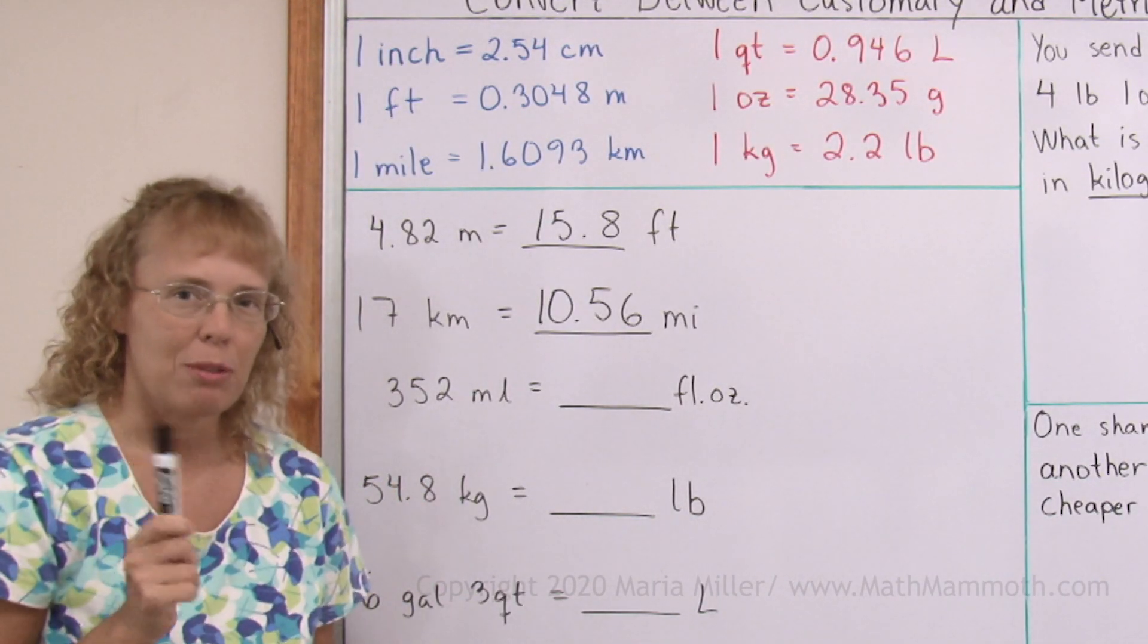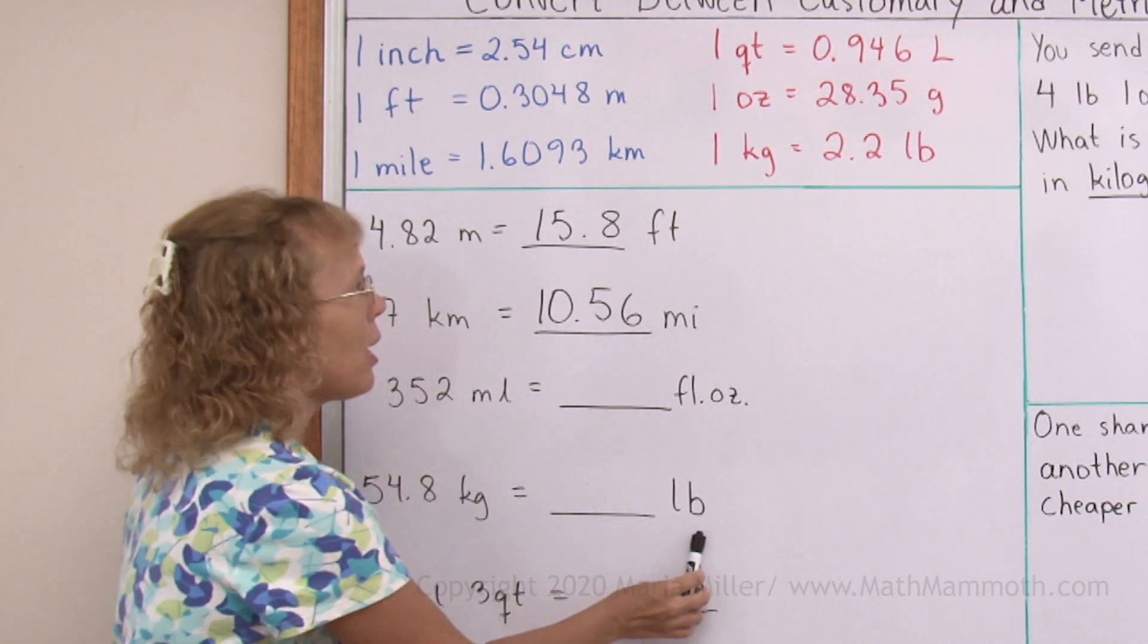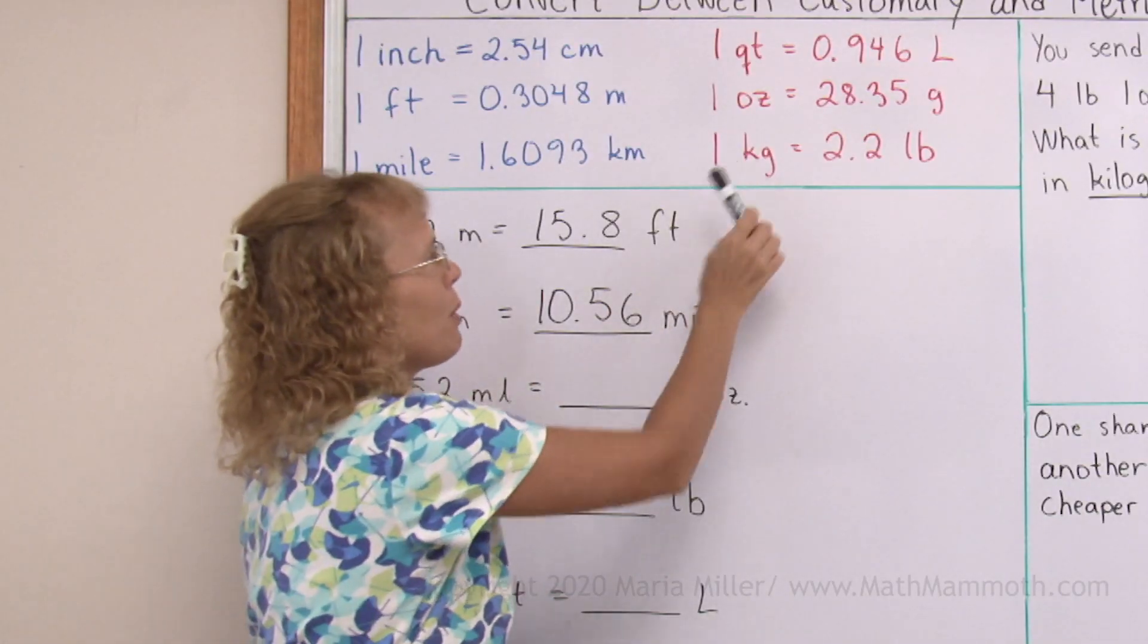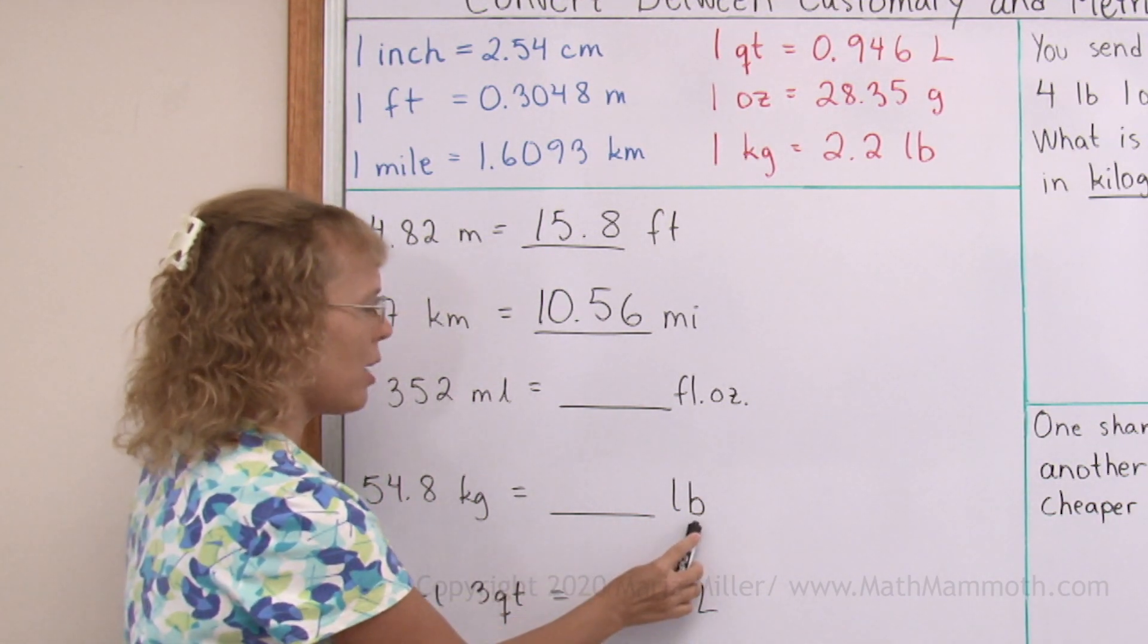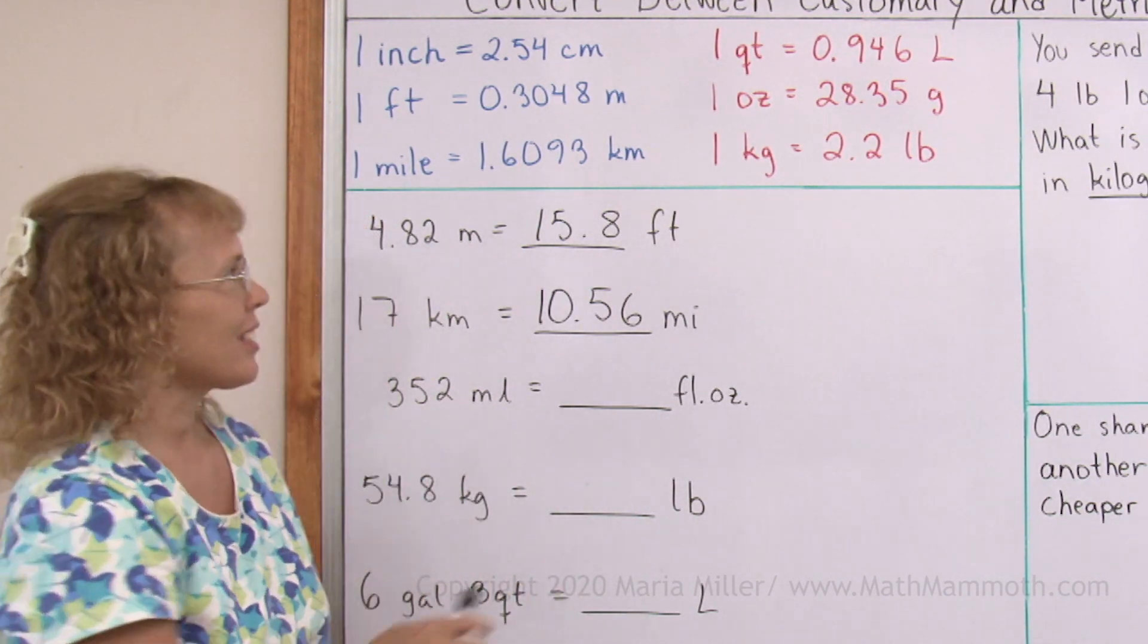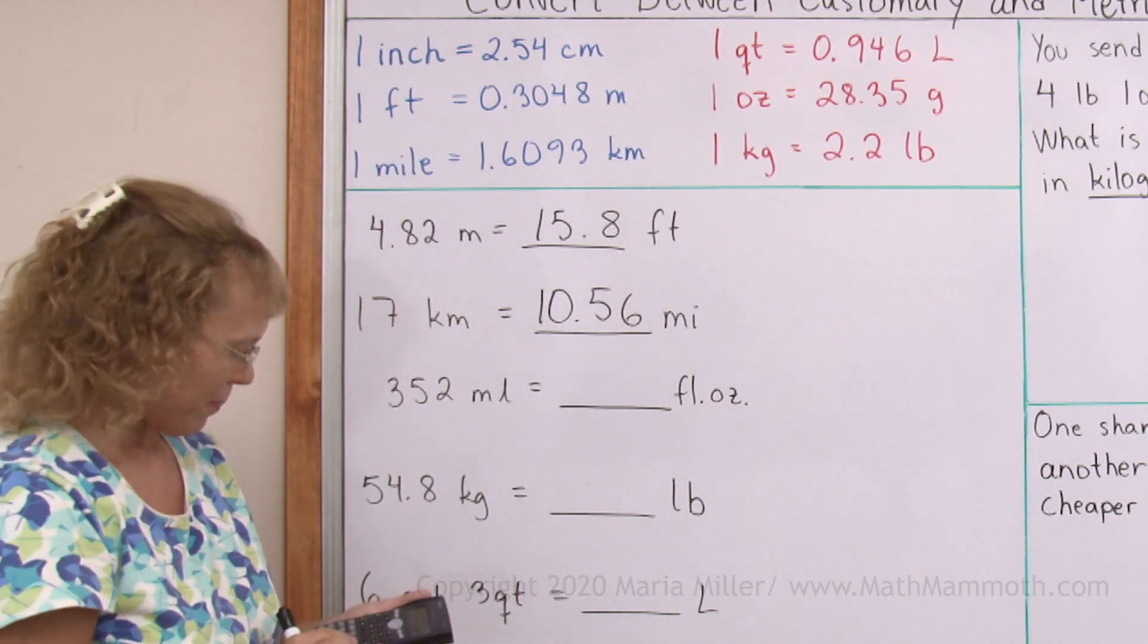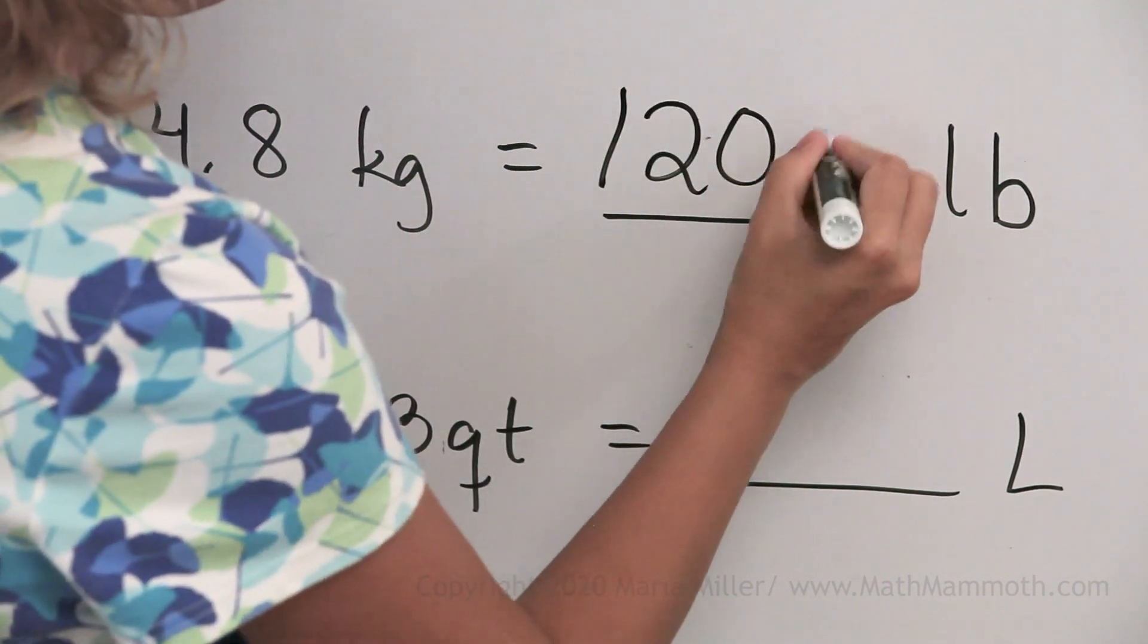This one I'm going to skip for now. We'll come back to it in a little bit. Let's take this one because it's easier. We have kilograms and pounds. Here's our factor. One kilogram is 2.2 pounds. So you can see over here that one kilogram is the bigger unit, right? I have this many kilograms into pounds. So in pounds, I need a bigger number. Just like here, the number for pounds is the bigger number. So in order to get the bigger number, I need to multiply by 2.2. Okay, 120.56.